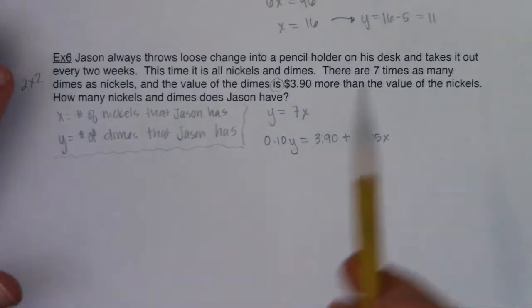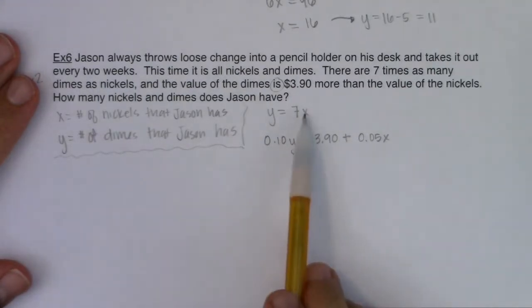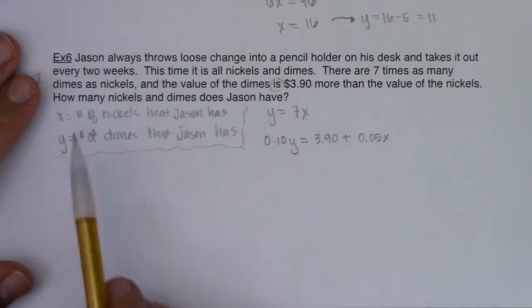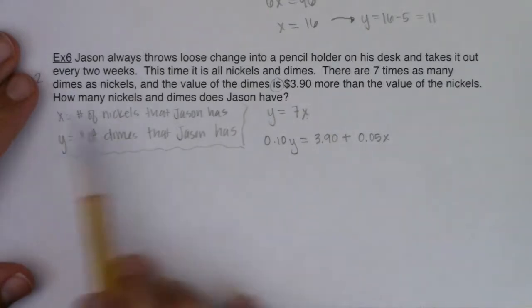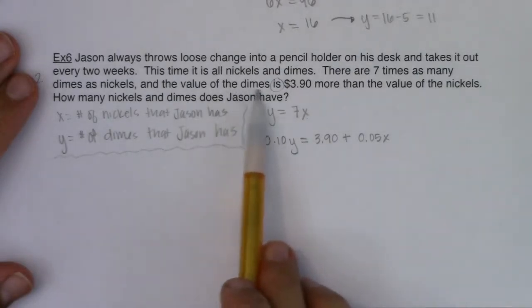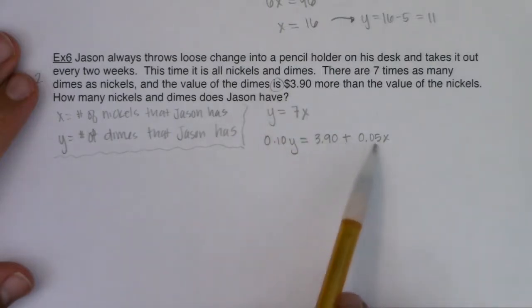Alright, so let's reiterate because I told you this one's a doozy. There's seven times as many dimes as nickels. So for however many nickels you have, which is X, multiply that by seven. That's the number of dimes you have. And if we start talking about the value of this, if you have X nickels, they're worth 0.05X. If you had 10 nickels, they're worth 0.05 times 10, or basically 50 cents. If you have 20 dimes, it's 10 cents per dime. And it says the value of the dimes 0.10Y is 3.90 more than the value of the nickels.